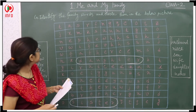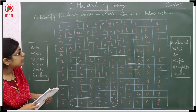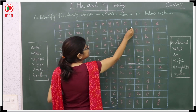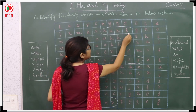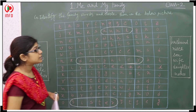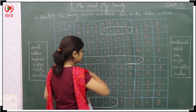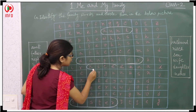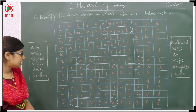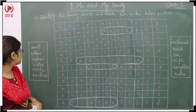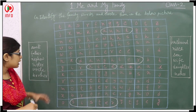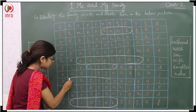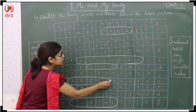Next if you will see the first one: aunt — A-U-N-T — that's why I got this one also. Next if I want to see the niece — N-I-C-E — see here I got the niece also. Next if you want to find out the uncle — U-N-C-L-E — see here the uncle also I got.